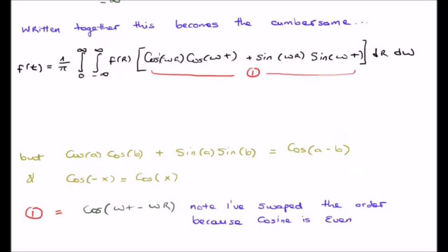What this means is that I can actually change the order in the cosine. Because cosine is an even function, I can swap that and say that a is going to be omega times t and B is going to be omega times R.